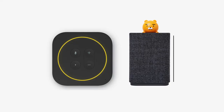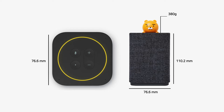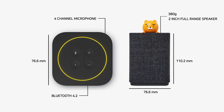The size of this device is 110mm long and 76mm wide with a black fabric cover, and it's only 380g, which is very tiny and light. The performance of this device is pretty impressive as well. It's got a 2-inch, 4-inch speaker with a 4-channel microphone and Bluetooth 4.2.